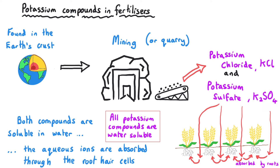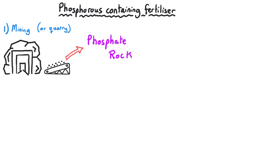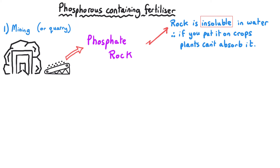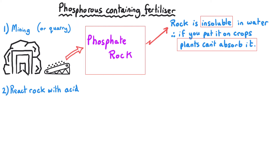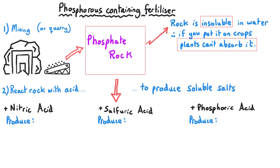Producing fertilisers that contain phosphorus requires two steps. The first step is mining the rock that contains the phosphorus, generally referred to as phosphate rock. However, this rock is insoluble, so if you sprinkled it directly on a field, the crops could not absorb the phosphorus because it is not soluble in water. So we have to take that rock and react it with acid, and we get different products depending on which acid we use.